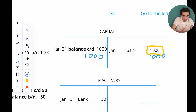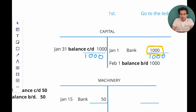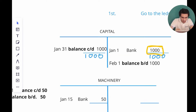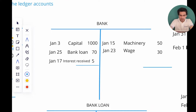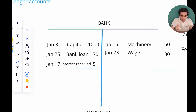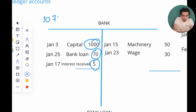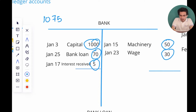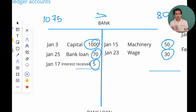In the next month, on February 1st, the credit side will start with the balance of one thousand dollars brought down from the debit side of the last month. Moving on to the bank account, which has several entries on both debit and credit sides. Adding up all the debit entries — one thousand, seventy, and five — gives a debit total of 1,075. Adding the credit entries gives a total of 80 dollars. Since the debit side is more, I need to add a balance amount on the credit side.